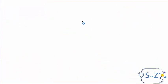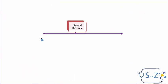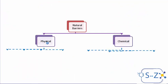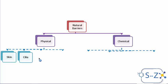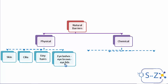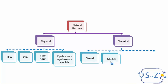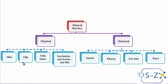To summarize, the natural barriers can be classified into two types: physical or mechanical, and chemical. Physical barriers prevent the entrance of pathogens by themselves — these include the skin, cilia, tiny hairs, eyelashes, eyebrows, and eyelids. Chemical barriers are substances that kill microorganisms — these include sweat, mucus, earwax, tears, and stomach acid.